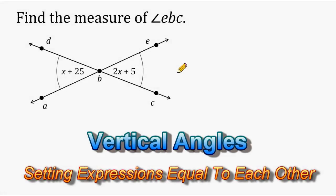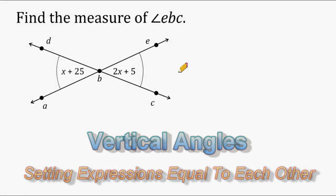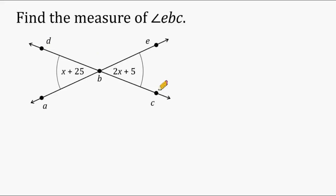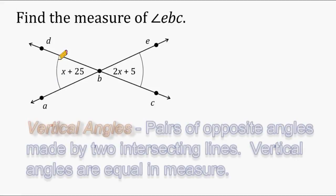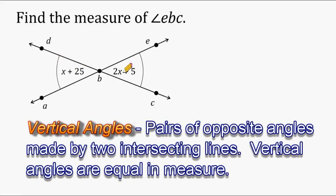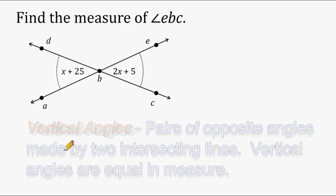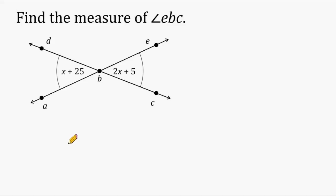In this problem, we have a set of intersecting lines. Line segment DC is intersecting line segment AE. When two lines intersect each other, they form what is known as vertical angles. This angle right here would be vertical to this angle here. EBC and DBA are vertical angles, and vertical angles always have the same angle measure. We also have this obtuse angle, angle DBE, which is vertical to angle ABC. So these two angles are vertical angles as well.